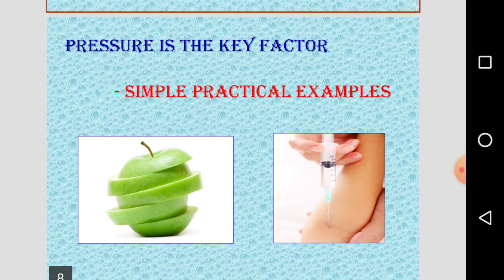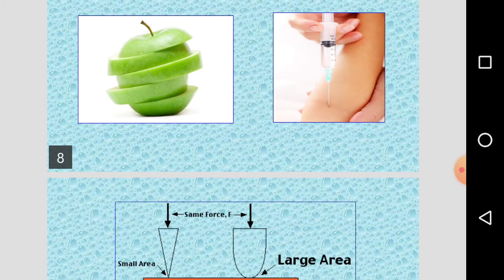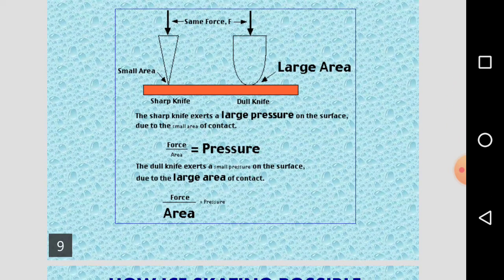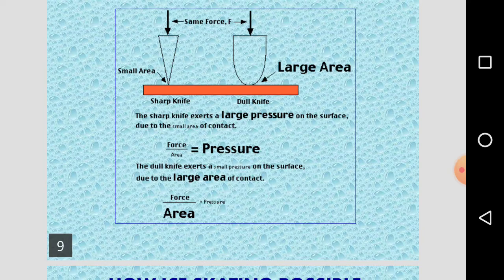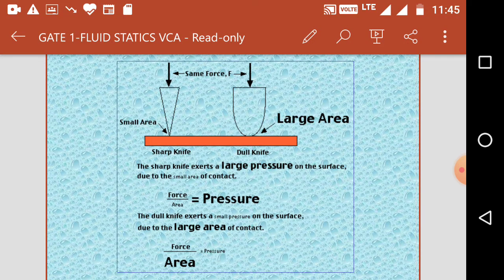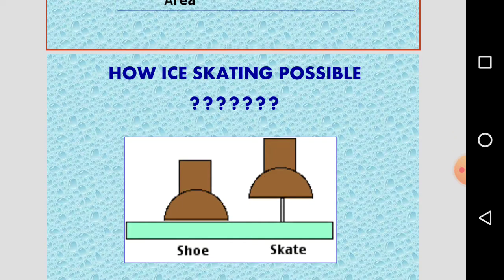See here a fruit, green apple, cut using a knife which is very sharp. Area of cross-section reduces and pressure is more, it is easier to cut the fruit. Then see here two specimens, one is a sharp knife, another one dull knife.